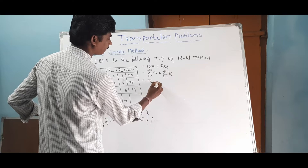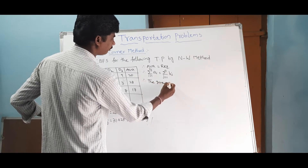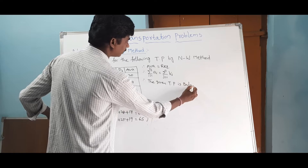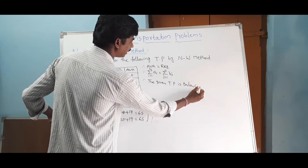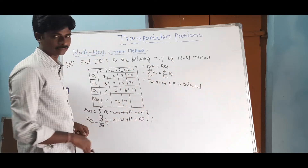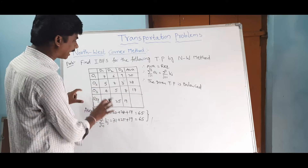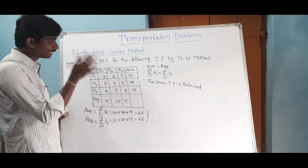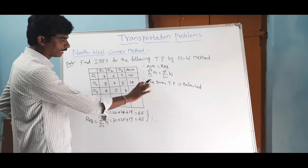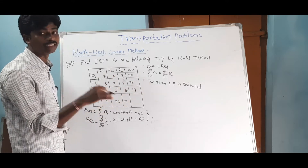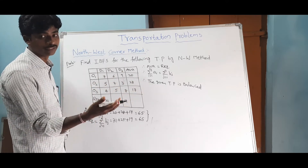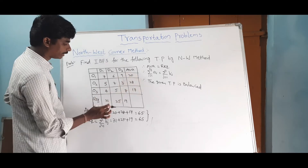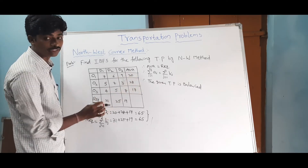Since the transportation problem is balanced, we do not need to add any dummy row or column. Now we proceed to apply the North-West Corner Method. Looking at the matrix, what is available and where are the requirements? The first destination requires 21.